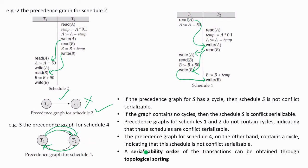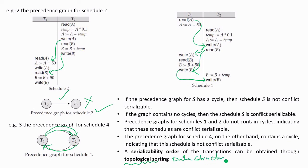A serializability order of the transactions can be obtained through topological sorting. You can look up topological sorting in data structures as a homework exercise. That was all for today, thank you.